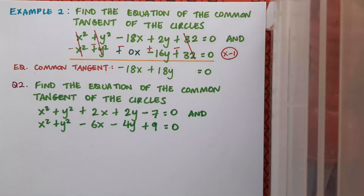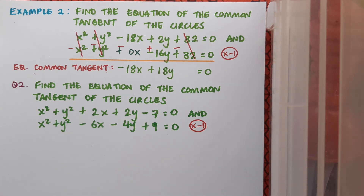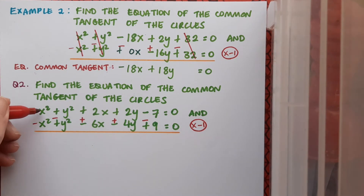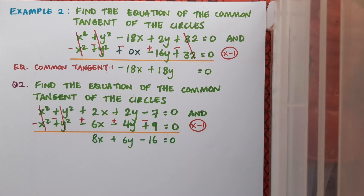Here's a question for you. Find the equation of the common tangent of these circles: x² + y² + 2x + 2y - 7 = 0 and x² + y² - 6x - 4y + 9 = 0. Pause the video, do the question, then check your answer. I'll multiply the second equation by -1, tidy it up, the x² and y² cancel, and finally I have the equation of the common tangent.